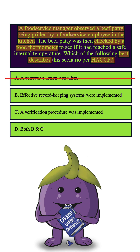How about B? Again, there's no mention of record-keeping in this question. Although the manager is observing and the employee is cooking, the question doesn't mention if the manager or employee writes or documents anything. So we can eliminate this answer choice as well.